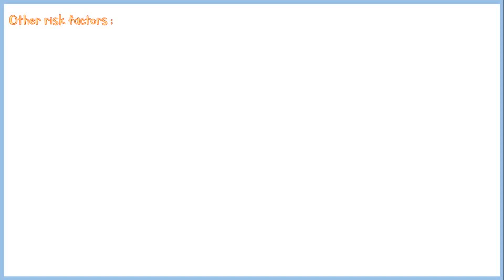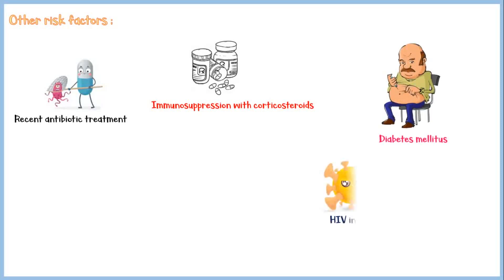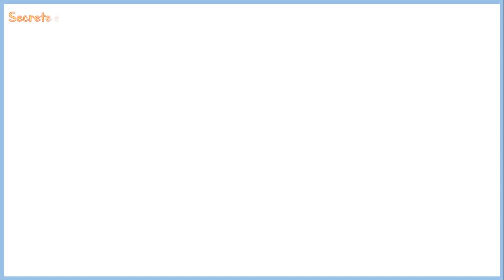In addition to skin disruption, there are other risk factors that may increase the likelihood of infection, including recent antibiotic treatment — because it may alter the normal skin flora — immunosuppression with corticosteroids, systemic diseases like diabetes mellitus, HIV infection, dialysis, and intravenous drug abuse. Once these organisms bind to the host cells, they secrete enzymes such as proteases, lipases, coagulases, and hyaluronidases that damage host tissues.